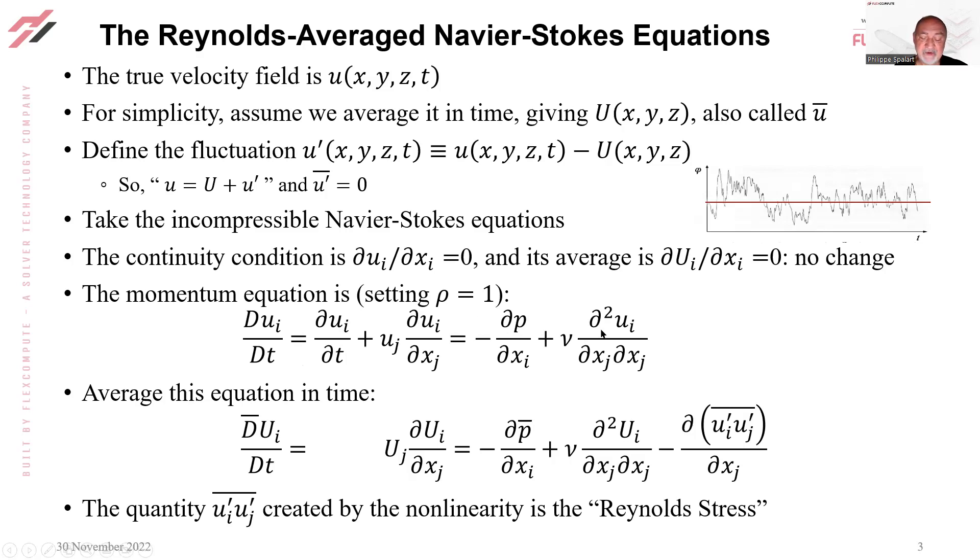So let's average this equation in time. The time derivative goes away. The pressure term, just like before for the continuity condition, we just put an overline over P. And the same thing for the viscous term, which is linear; it just goes from ui to capital Ui.